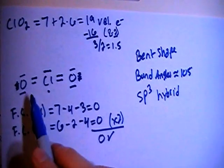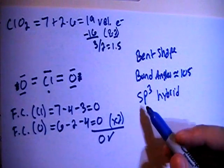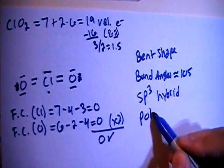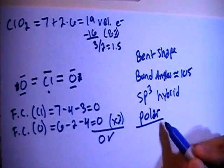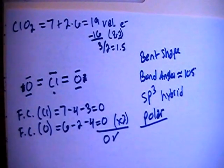And due to the fact that they're of the bent shape, and these non-bonding electrons on top, it's going to end up being a polar compound. All right, that's pretty much it. If you have any questions, let me know. And thanks for watching.